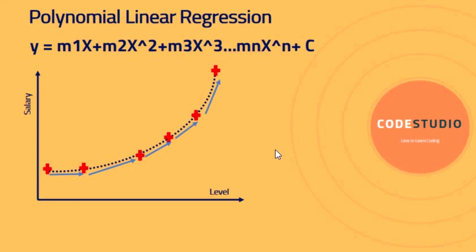A key question is: why do we call it linear when the output variable y is not linear with x, x², x³? We call any model linear when its output is linear with its coefficients — m1, m2, m3 — but not necessarily with its x values or independent features. The polynomial model can be used to predict growth rate of tissues and progression of disease epidemics, for example.